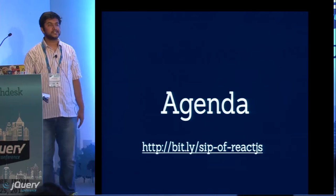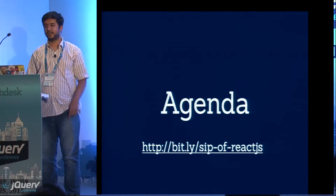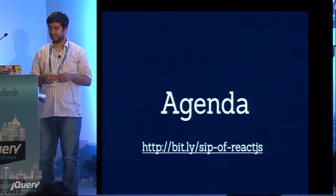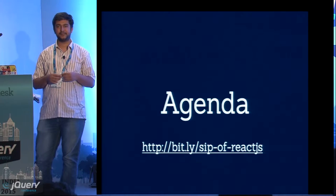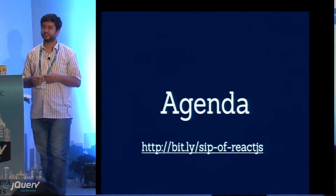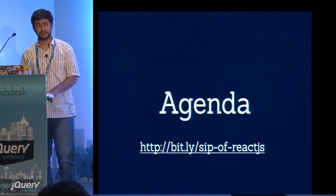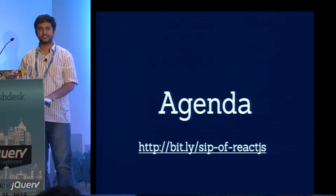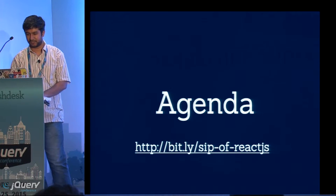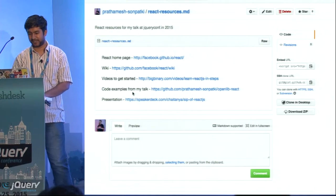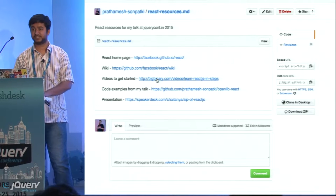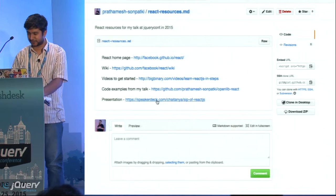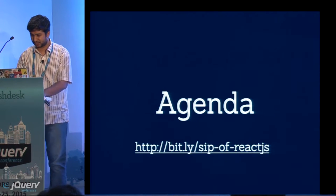Today's agenda is we will be discussing some of the concepts of React, some of the features that go against the traditional way of development. We will be building a small app based on the Open Library API for understanding those concepts. You can check this link, bit.ly/sip-of-react.js. Here I have mentioned some resources for getting started with React. I have also added a link for a video series we prepared, and you can find code examples from my talk and a link to the presentation.